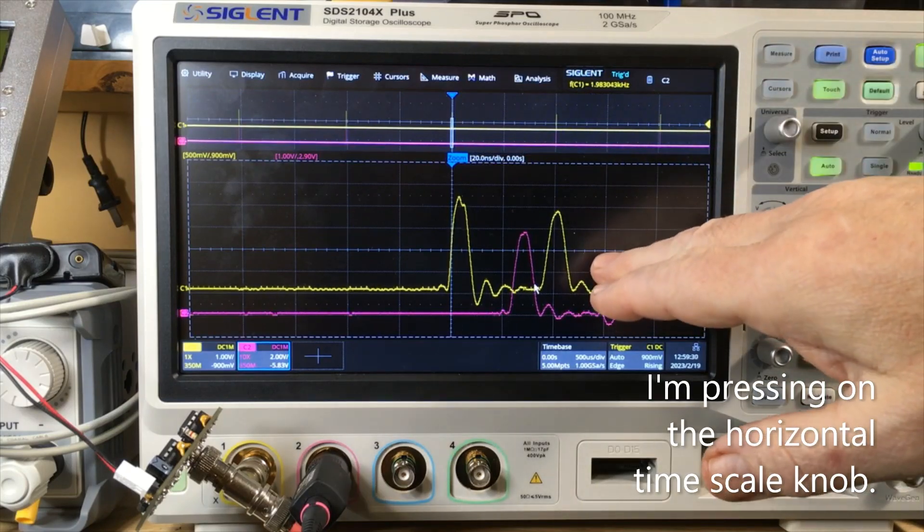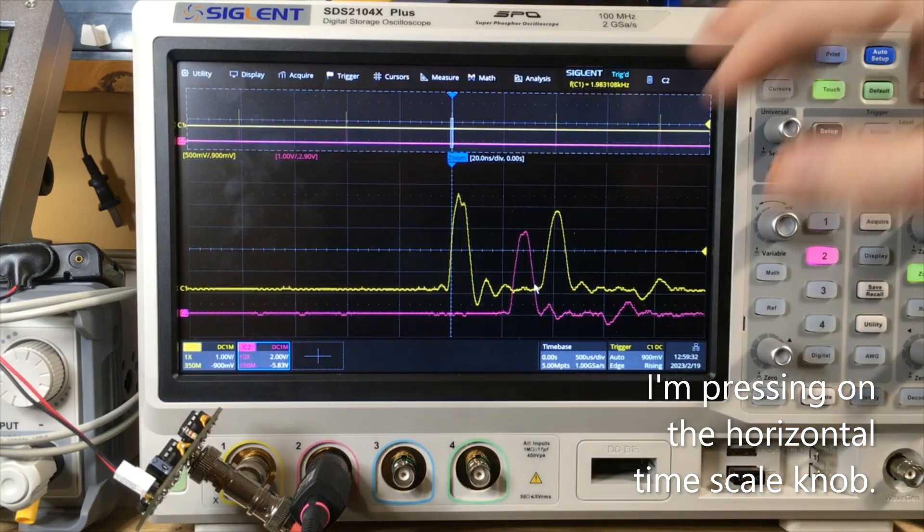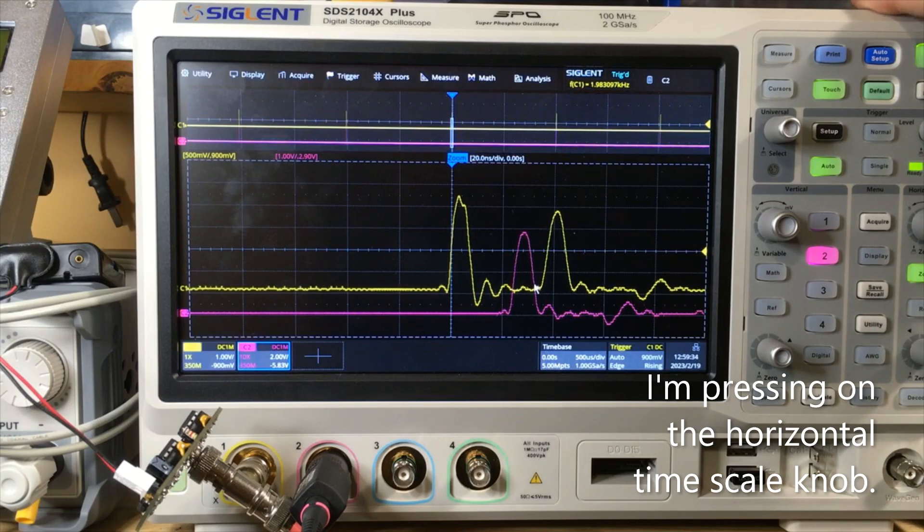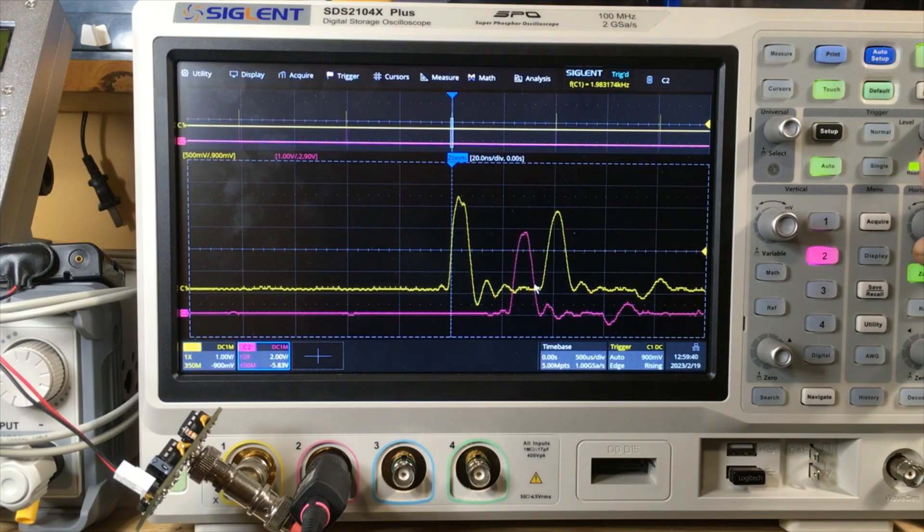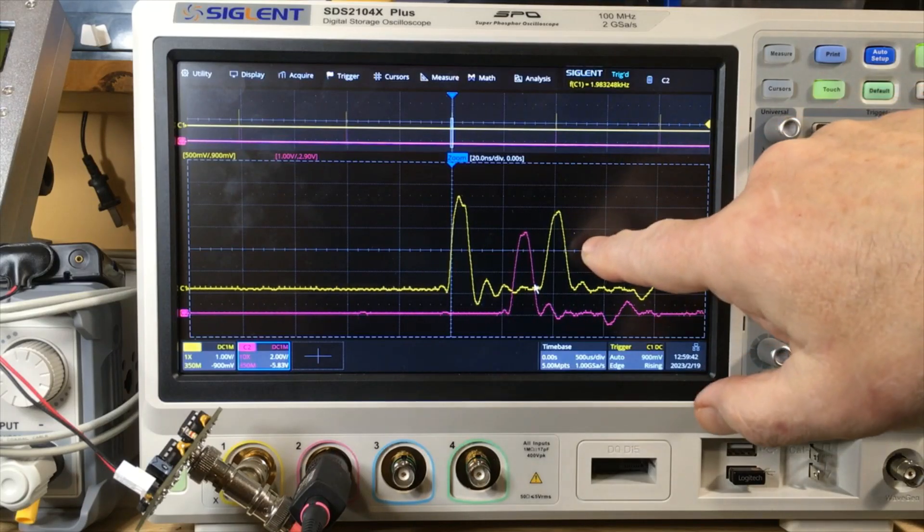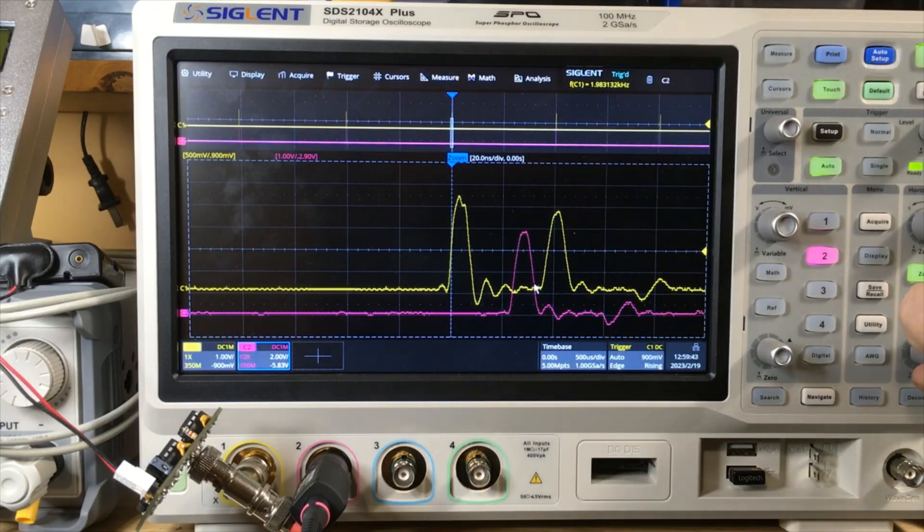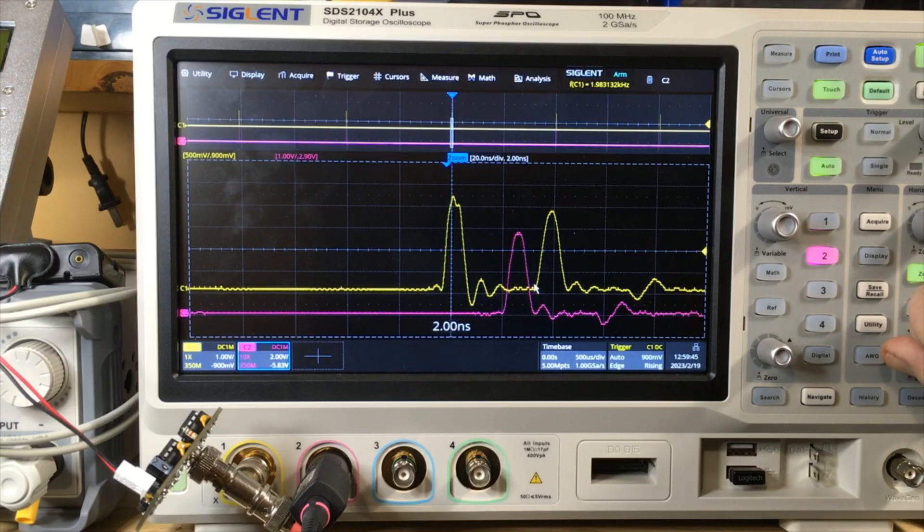It has a few little features. If I press this button here, I can change the focus between either the zoomed window or the main window. If we're on the zoom window, then all the controls work on the zoom window. If I stretch out the time base, it stretches out the zoomed area. If I shift it, it shifts the zoomed area.